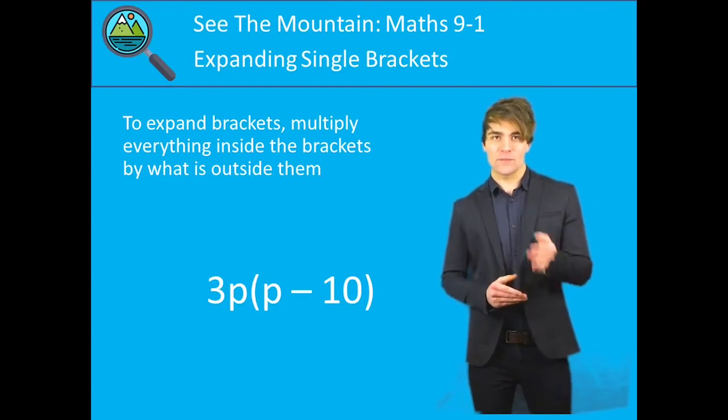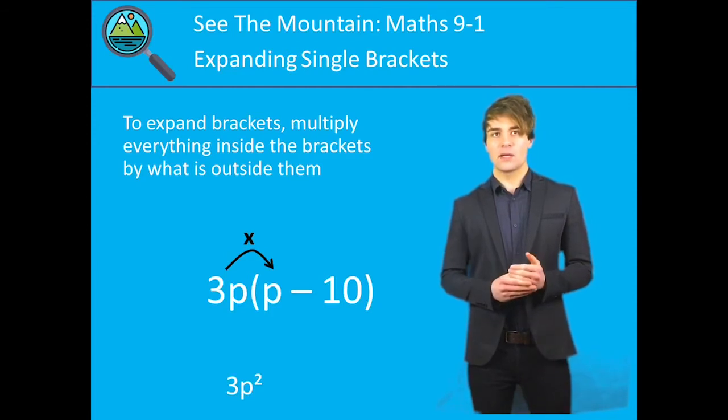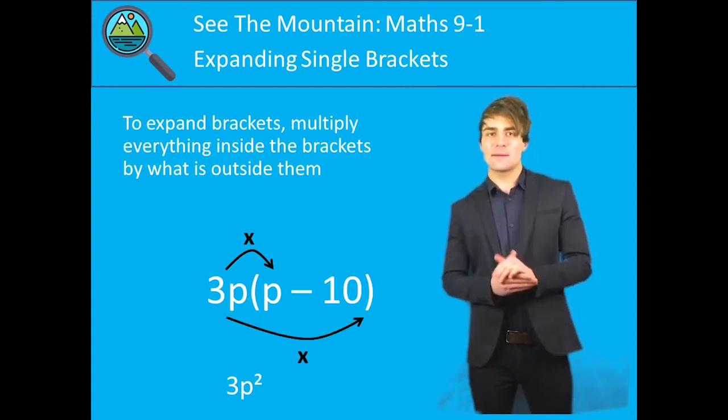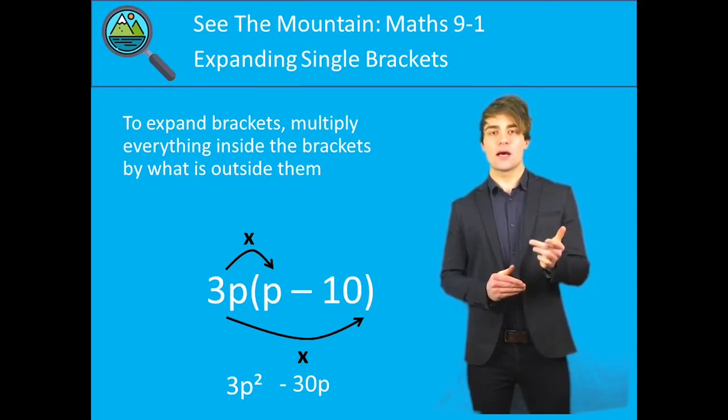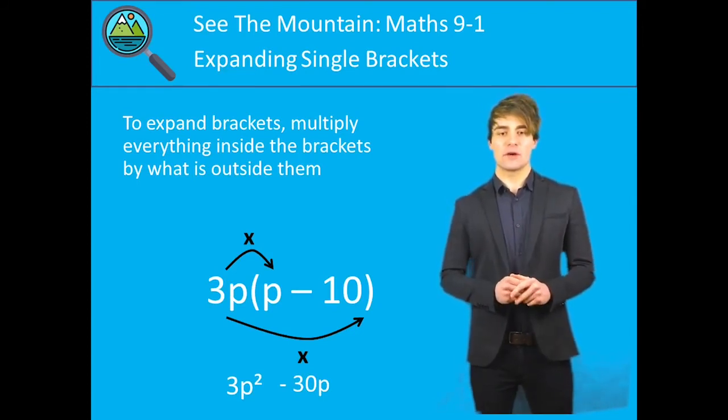Okay, here's what you should have found. 3p times p, 3p². 3p multiplied by the minus 10, -30p. Final answer, 3p²-30p. Huge congratulations if you got that.